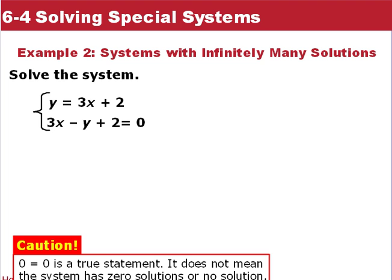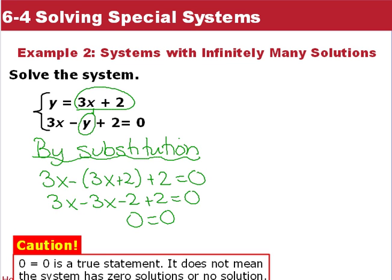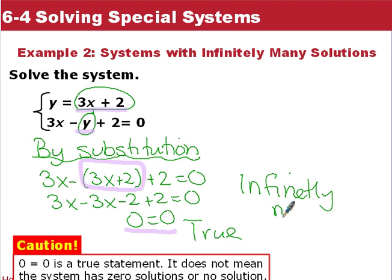Here, let's solve this system. Again, substitution is a great way to do this. We have y equals this, so we can substitute it into that y there. So we get 3x minus y, which is 3x plus 2, plus 2 equals 0. Distributing the negative to everything in parenthesis, we get 3x minus 3x minus 2 plus 2 equals 0. Simplifying, we end up with a true equation, 0 equals 0. That is true, so therefore we have infinitely many solutions.